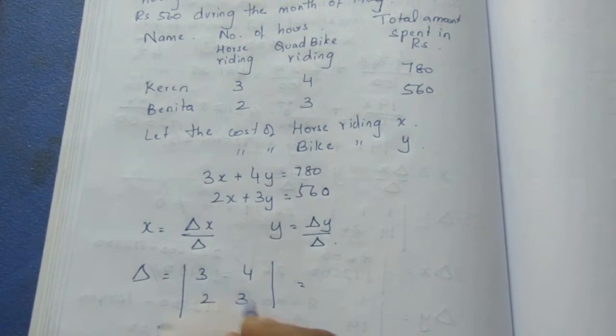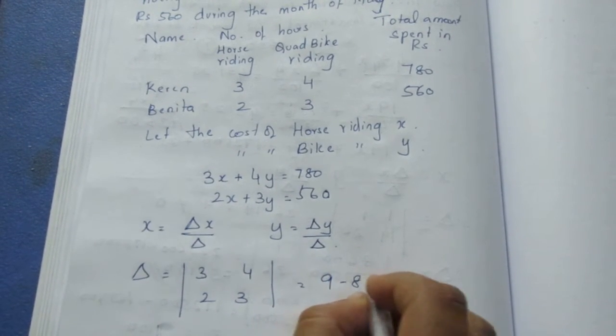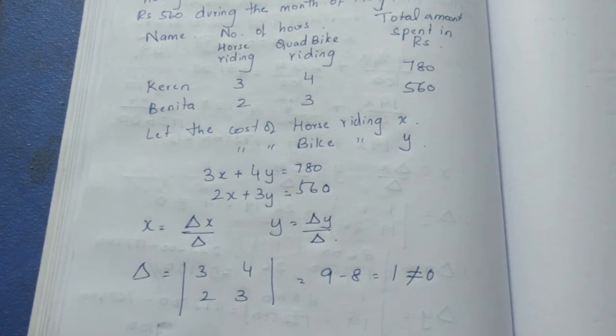First, we multiply the principle diagonal: 9 minus 8, which is not equal to 0.